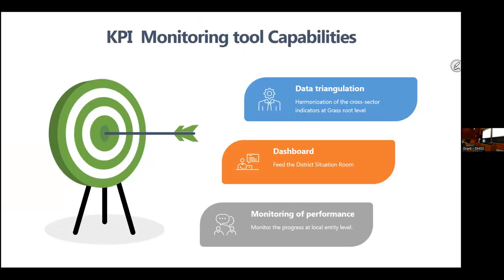Why should we care about a monitoring tool that automates the whole process? These KPIs — key performance indicators — are led by the Ministry of Local Government, because that ministry is in charge of all local administrative entities. As you go down to the grassroots, they don't care about health only — they care about all citizen services: health, education, and others. We expect the system to help with data triangulation across sectors, provide automated dashboards, and monitor performance across sectors and levels.